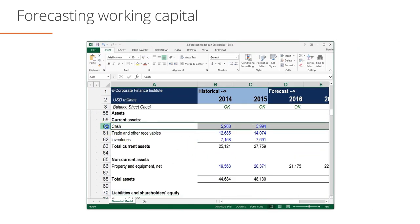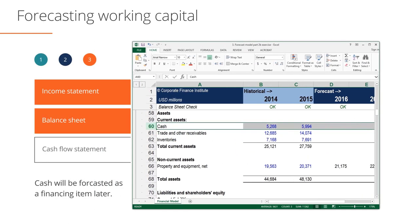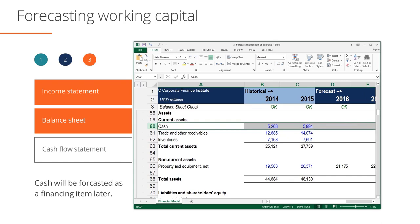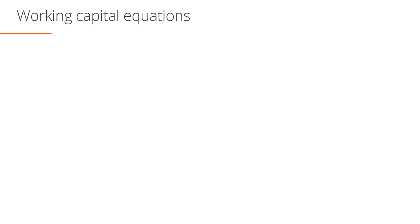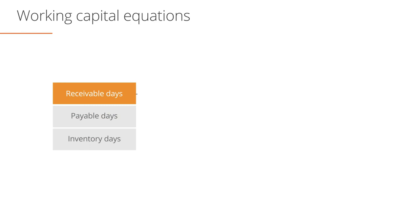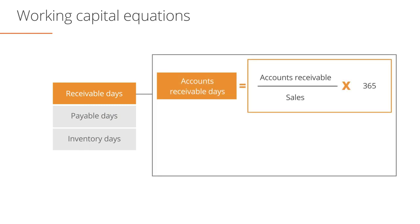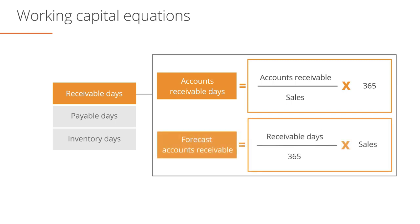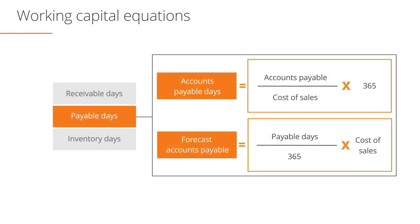Cash, although often considered part of working capital, will be forecasted as a financing item later. The first working capital item that we will forecast is accounts receivable. The accounts receivable days ratio is often used to link forecast receivables to revenue. The first formula seen here defines the accounts receivable days ratio. The second formula shows how we can use forecast sales and receivable days to forecast receivables.